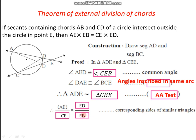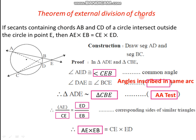If we cross multiply, we get AE into EB is equal to CE into ED. That is what we wanted to prove. This is the theorem known as the theorem of external division of chords.